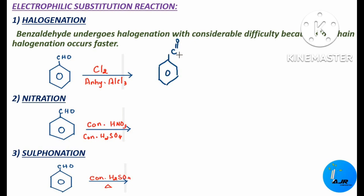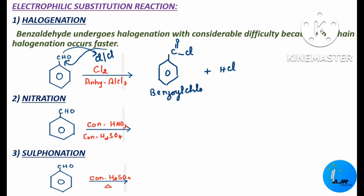The product is benzoyl chloride: C6H5–C(=O)–Cl. One hydrogen is replaced — this chlorine gets added up in place of H, and HCl is released. On chlorination in the presence of anhydrous aluminium chloride, we get benzoyl chloride.